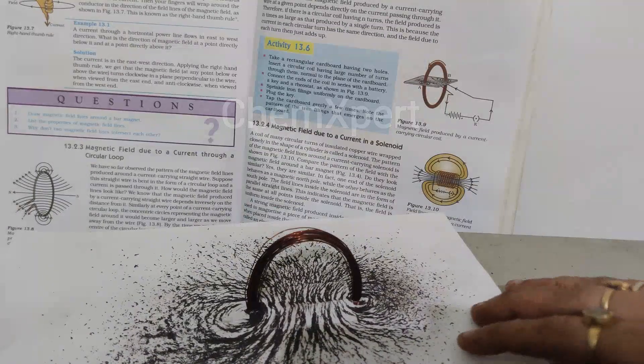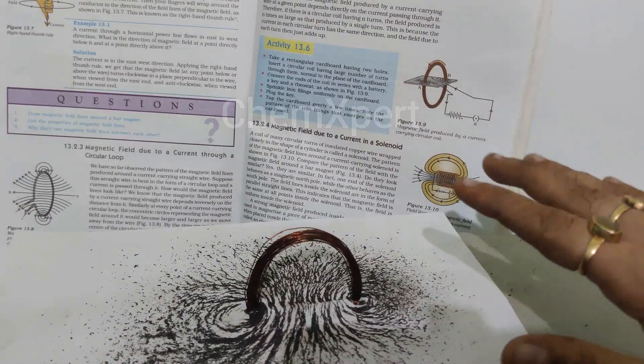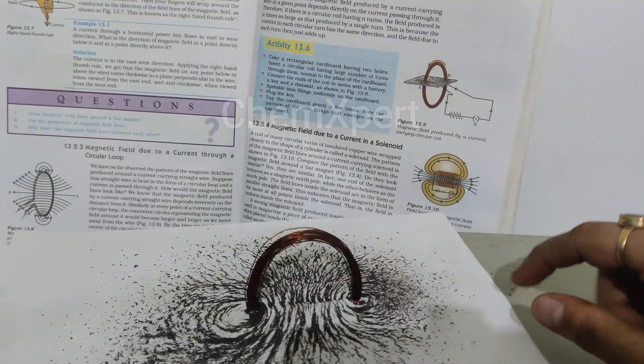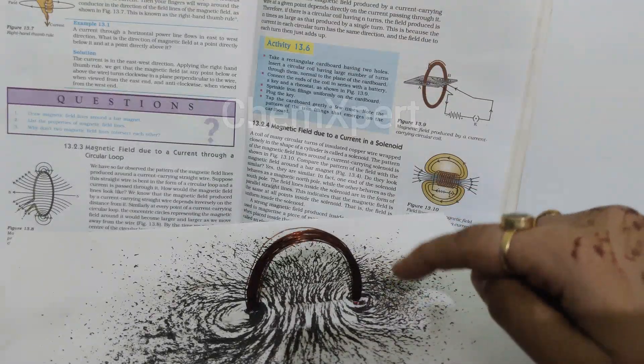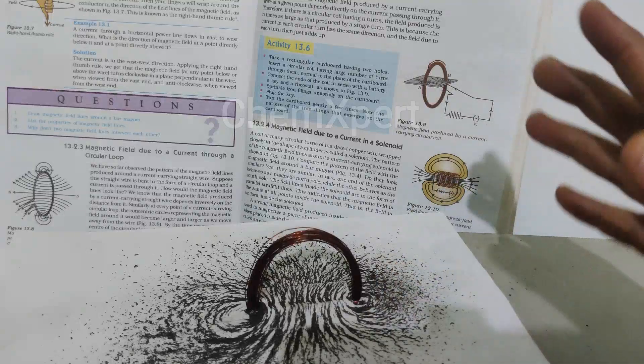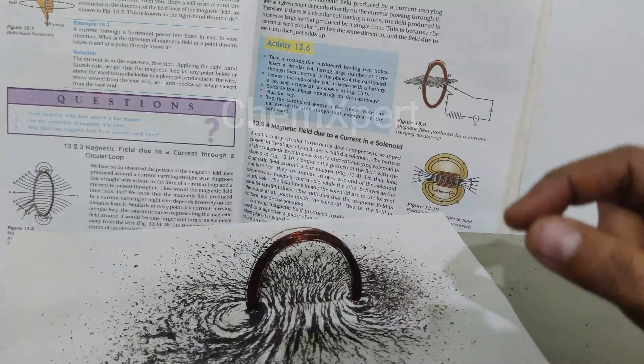Now the next important question from this topic is to find out the direction of the magnetic field. We have just formed these concentric circles, so what is the direction of the magnetic field?